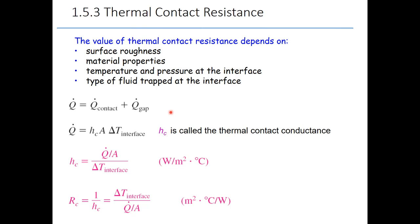To find Q dot for the contact and for the gap inside the imperfect contact, we use the rate of heat transfer for convection: Q dot = h_c · A · ΔT_interface, where h_c equals Q dot divided by area divided by ΔT at the interface. Therefore, R_c equals 1 over h_c, which gives R_c = ΔT_interface / (Q dot / A). That is the thermal contact resistance.